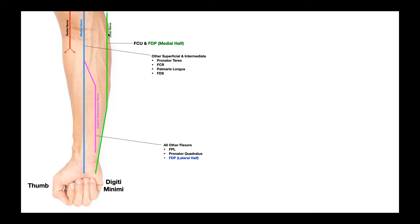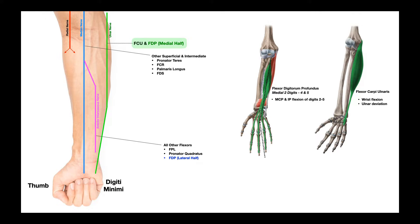Now in the forearm, the ulnar nerve only innervates two muscles: flexor carpi ulnaris and flexor digitorum profundus. Flexor carpi ulnaris is going to participate in both wrist flexion and ulnar deviation. Flexor digitorum profundus is interesting because it's innervated by two nerves depending on which half of the muscle you're looking at. The ulnar nerve innervates the medial half of this muscle — the side closest to the fifth digit.